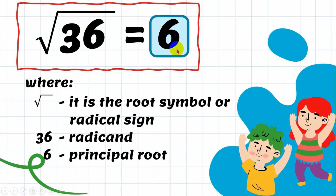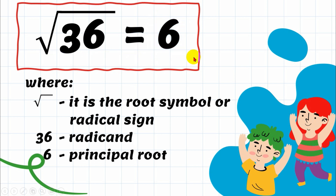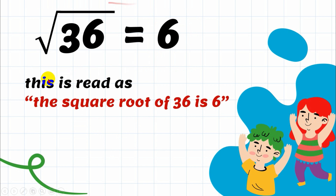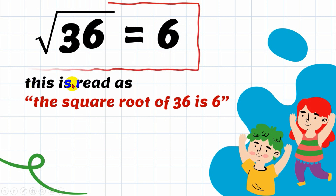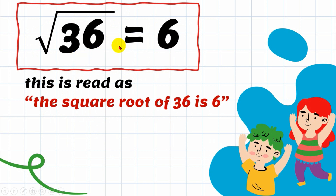This part is what we call the principal root — that is what we are looking for, the answer when you are given a radical expression like this. This is read as: the square root of 36 is 6.